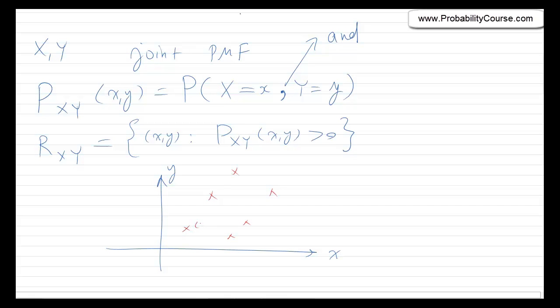For example, this is point (1, 1), and if p_xy(1, 1) = 1/4, that means the probability of this point is 1/4. Basically, I can calculate any probability that I want. For example, if I want to know the probability that (x, y) is one of three given points, I just add their probabilities.